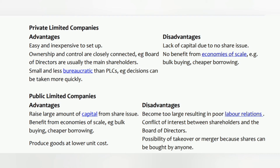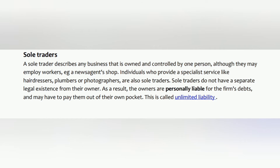Public limited companies — advantages and disadvantages. Advantages: can raise large amounts of capital from a share issue; benefit from economies of scale, e.g. bulk buying and cheaper borrowing; can produce goods at a lower unit cost. Disadvantages: can become too large, resulting in poor labour relations; conflict of interest between shareholders and the board of directors; possibility of takeover or merger because shares can be bought by anyone.